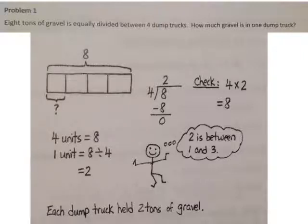Our division sentence for this problem would be eight divided by four. In our tape diagram, we know that we have eight units, eight tons of gravel, divided between four dump trucks. This whole thing is eight divided into four equal parts.